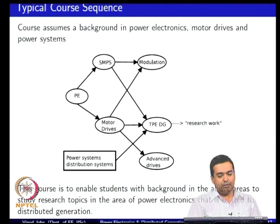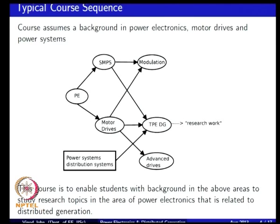If you look at the typical background required for the course, at IIT students who come in for a master's degree or for research degrees would have already done courses in power electronics and power systems. At an introductory level you would have a power electronics course and a power systems course, which gives some exposure to distribution systems. You would have also done courses on switch mode power electronics and on motor drives. The idea of this course is to take aspects of power electronics, some amount of machines and power systems, and look at the issues when you actually interconnect a distributed generation source with the grid.